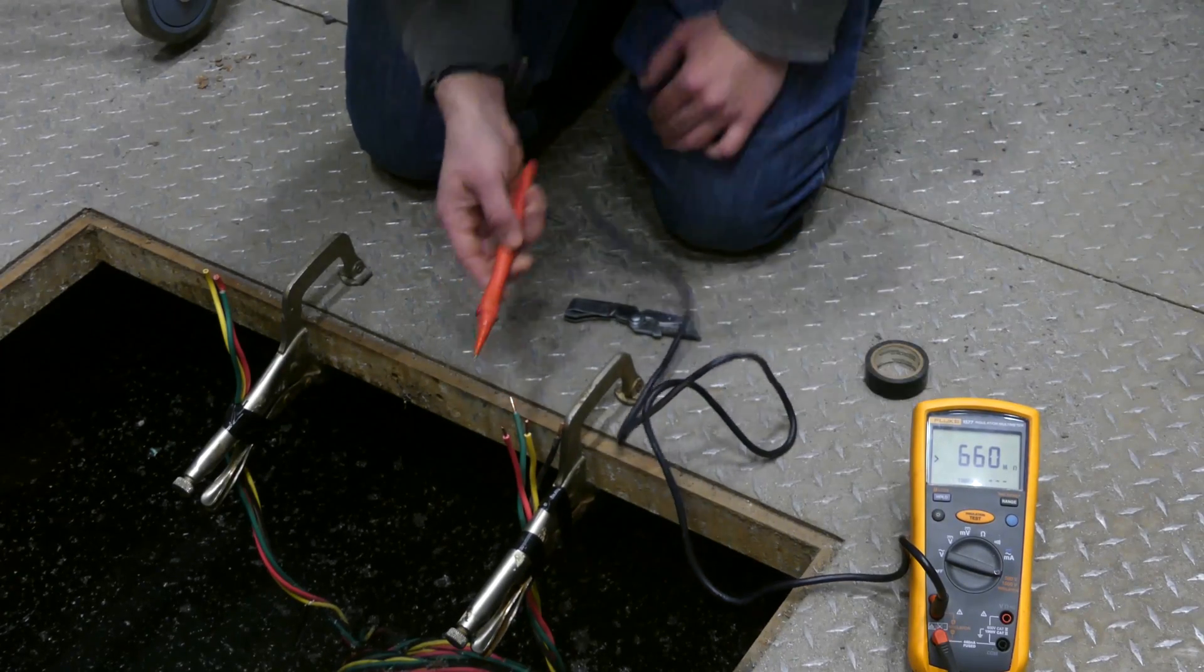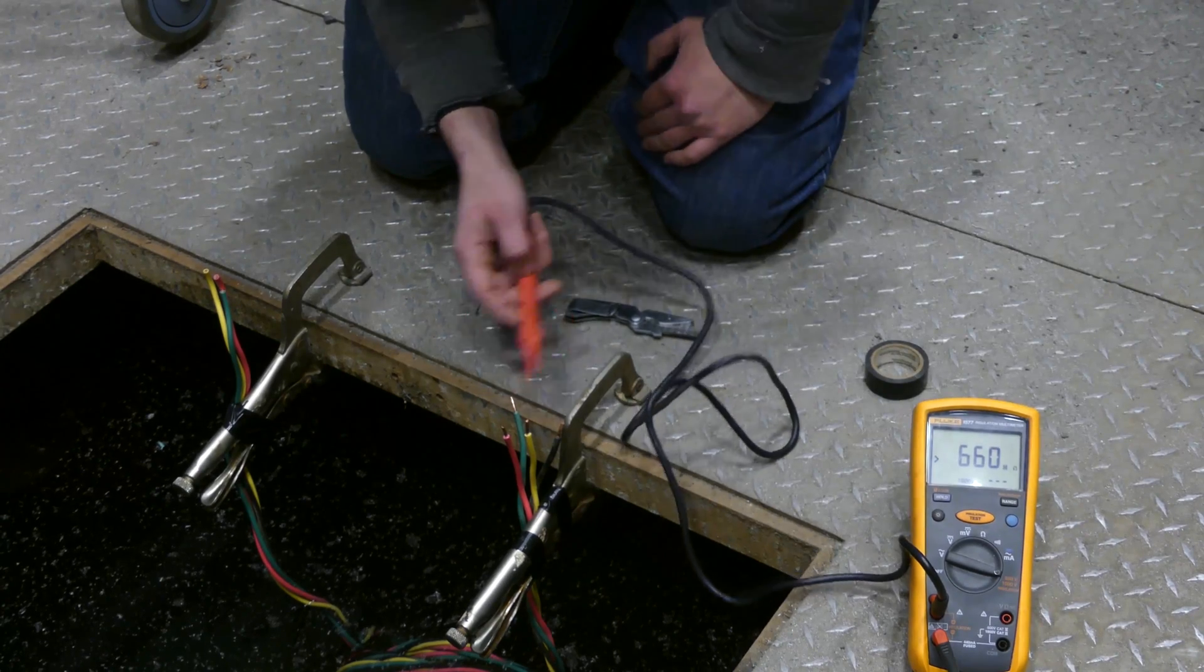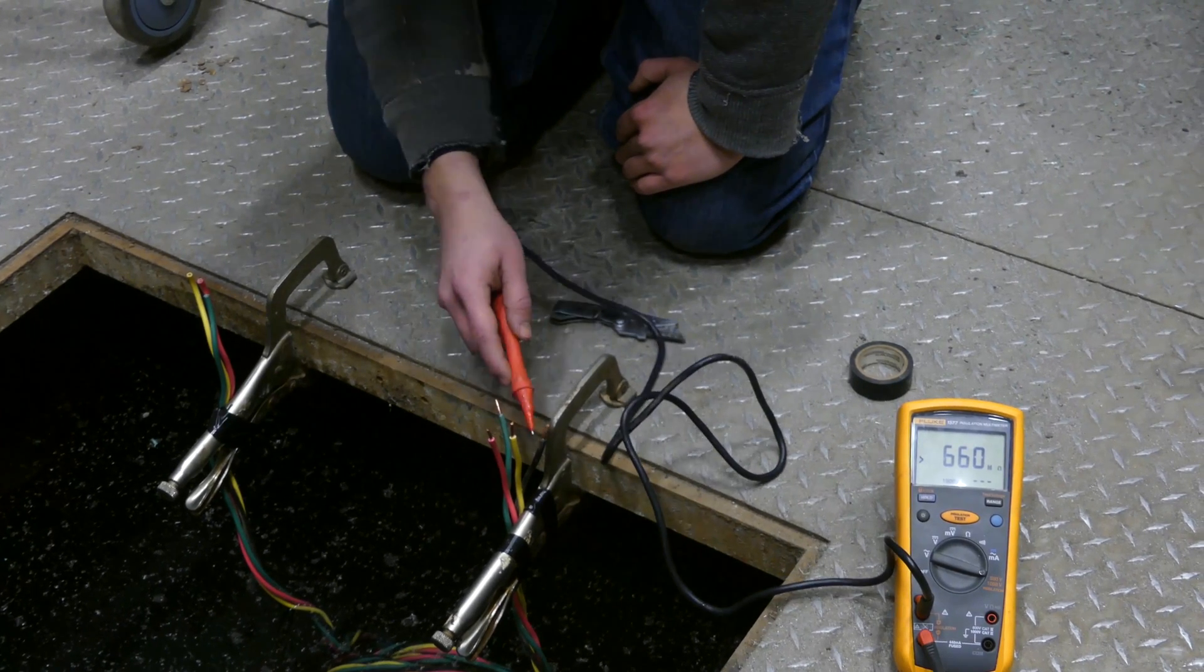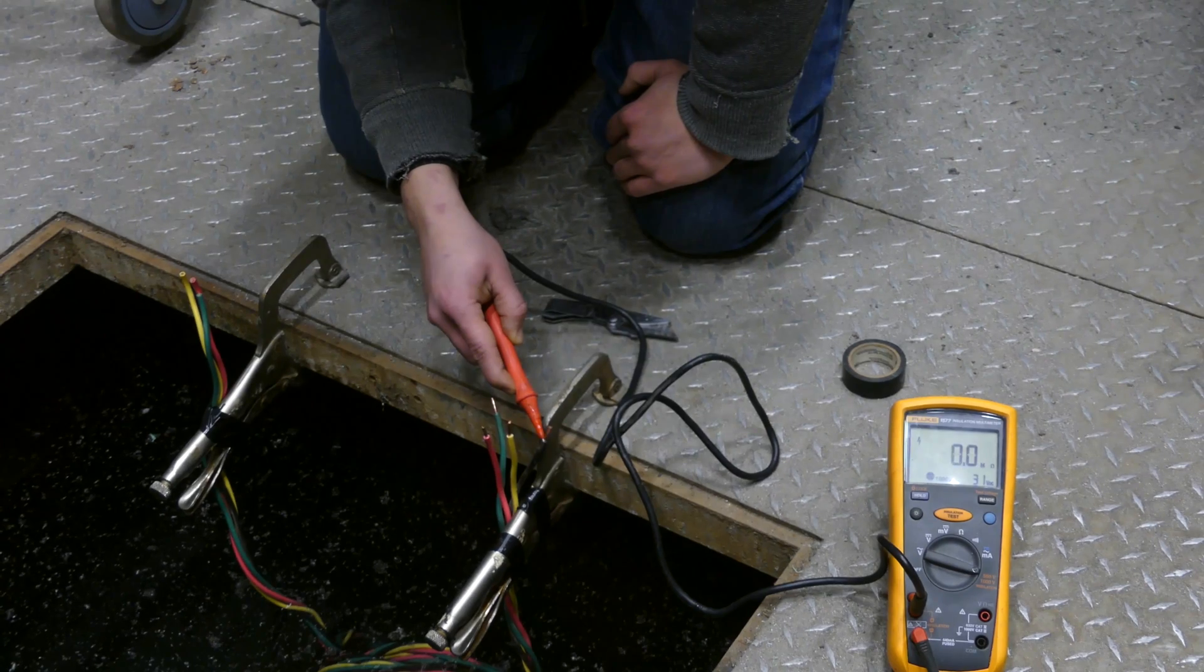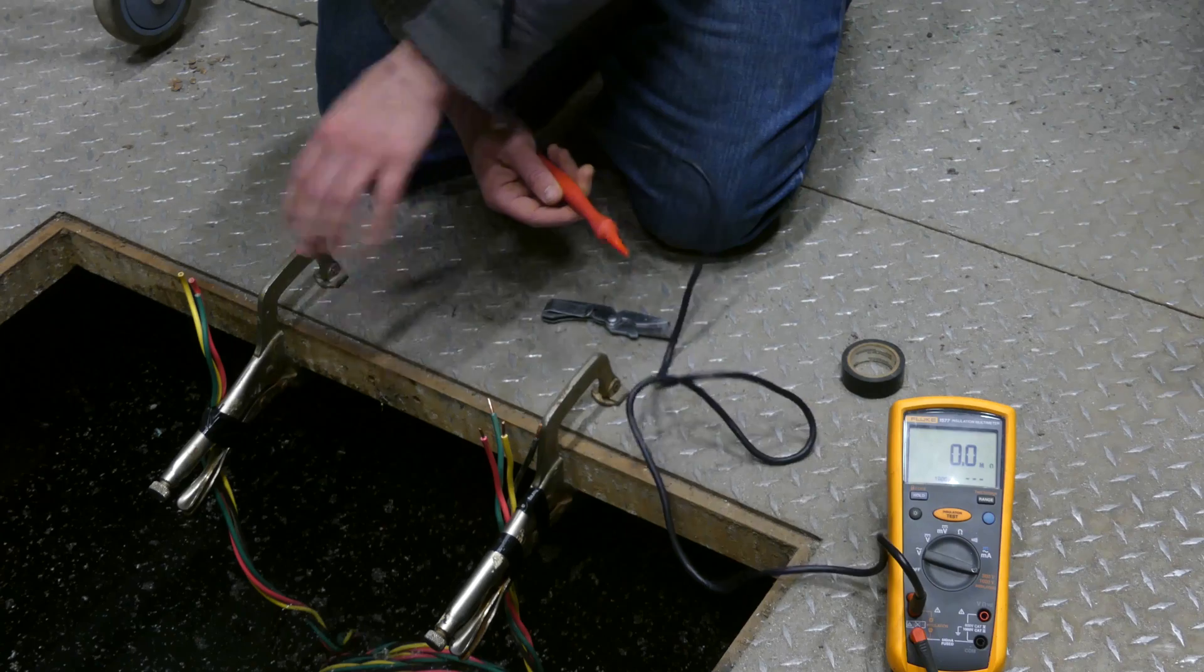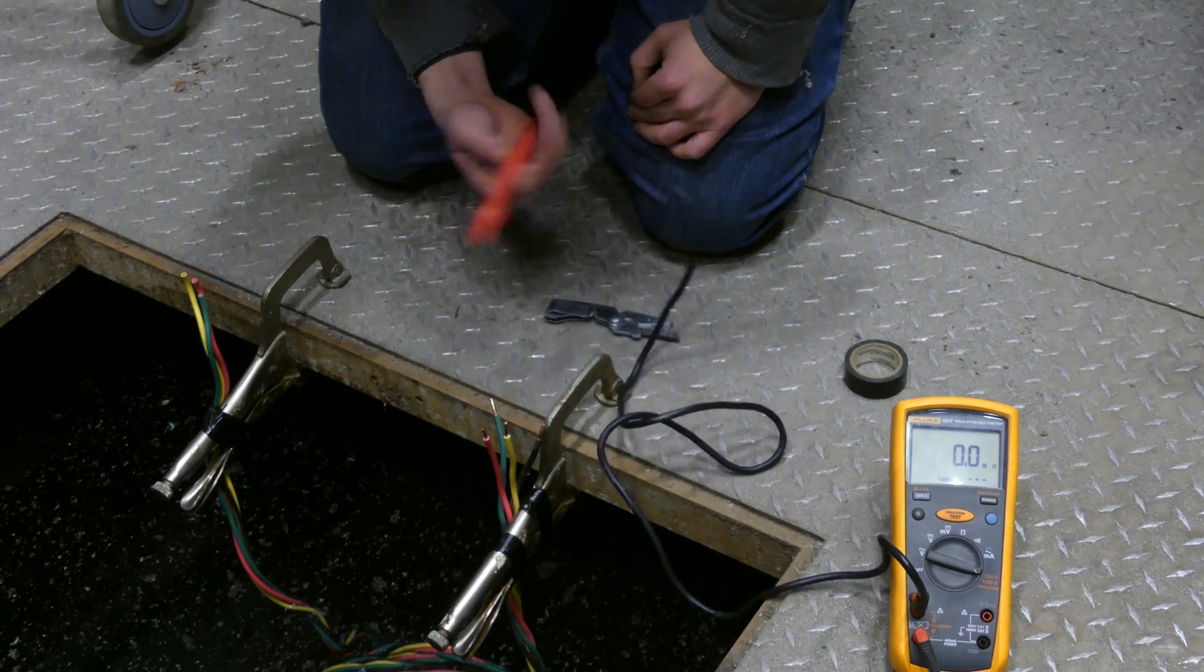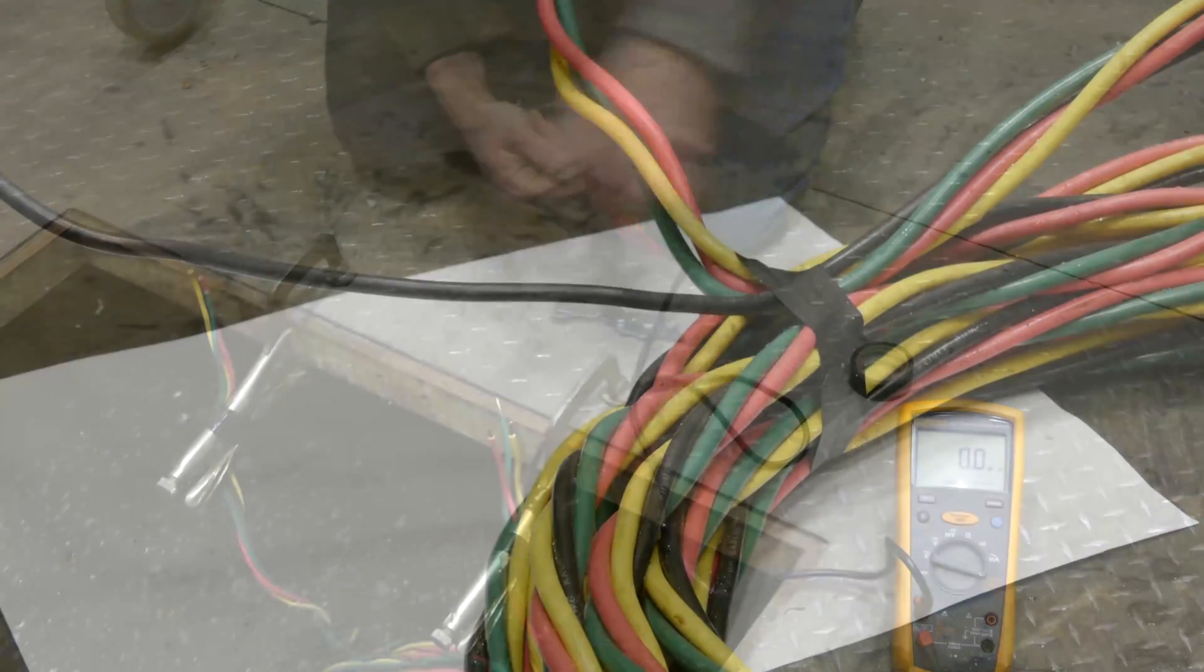So we're getting the 660 again. And the 660 on this meter I just learned is actually the max. It's infinity basically. It doesn't go any higher than that. So we could potentially be way higher than that, but we just wouldn't be able to see it on this meter. So let's test this black one. And wouldn't you know it, we're getting a zero. Now the incision that I made, we'll pull this out of the water and I'll show you the cut that I made was very small. However, it was able to pick it up immediately. So you can see the value of being able to test the wire.